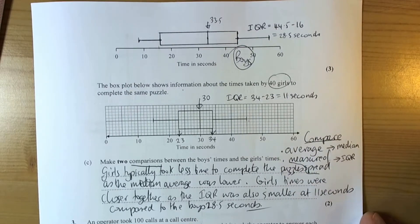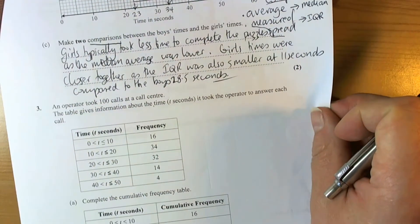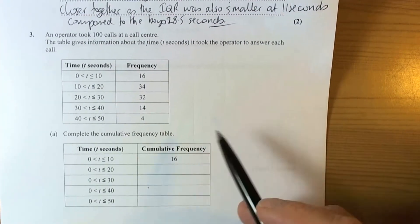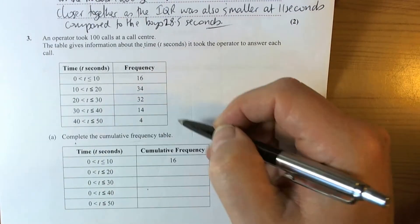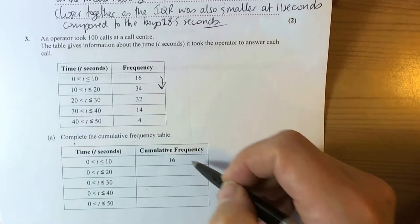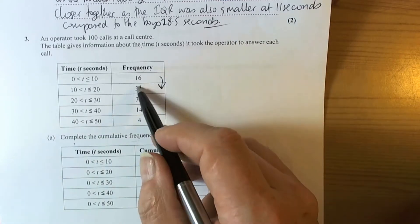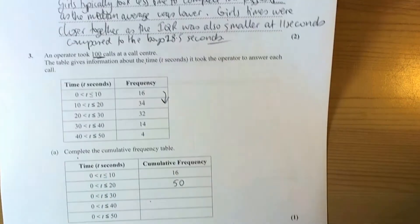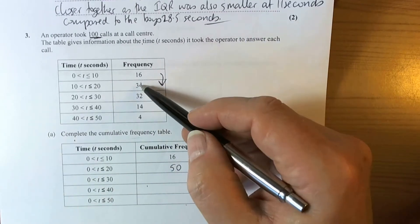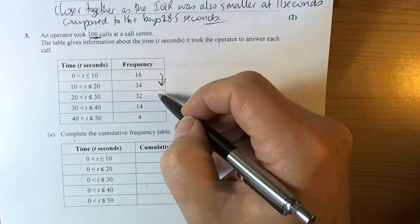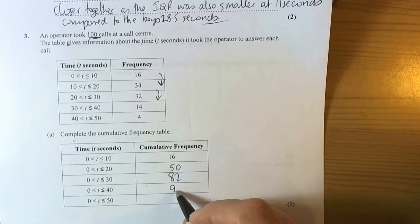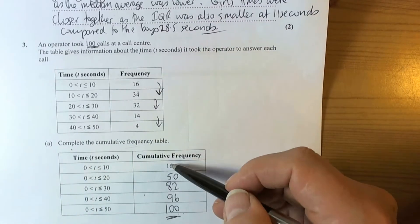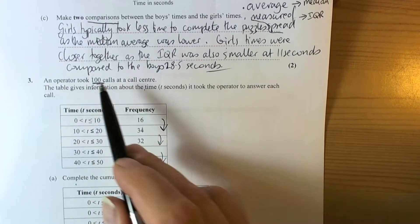That's an example of drawing box plots and using them to compare two sets of data. Here we've got to draw another cumulative frequency graph. It says complete the cumulative frequency graph, so it's about adding up frequencies as we go down: 16, then 16 plus 34 is 50, then 50 plus 32 is 82, then 82 plus 14 is 96, then 96 plus 4 is 100 — the 100 we were expecting.